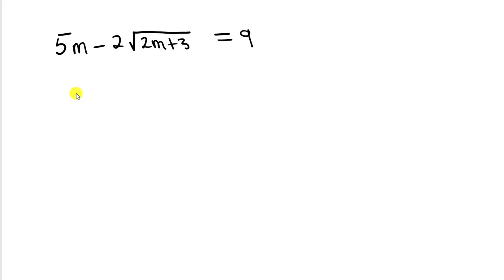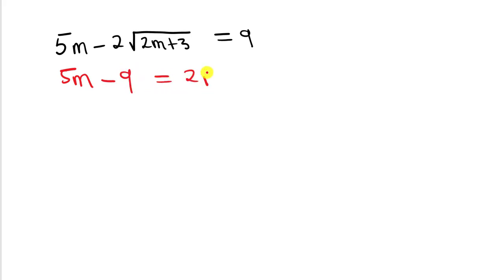You have been given this question. The first thing you have to do is make sure one of the sets, if you have multiple sets in the question, stands on one side of the equal to sign. So what we are going to do is shift the set to the other side. We are going to have our 5m minus 9 equal to positive 2 square root of 2m plus 3, now that we have the set standing on the other side of the equal to sign.